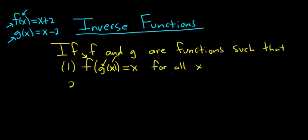Two, if you take the composition the other way, so g(f(x)), so again, f does something to x. If g is the inverse, it has to undo that. So we should just get back x, and again, this is true for all x.